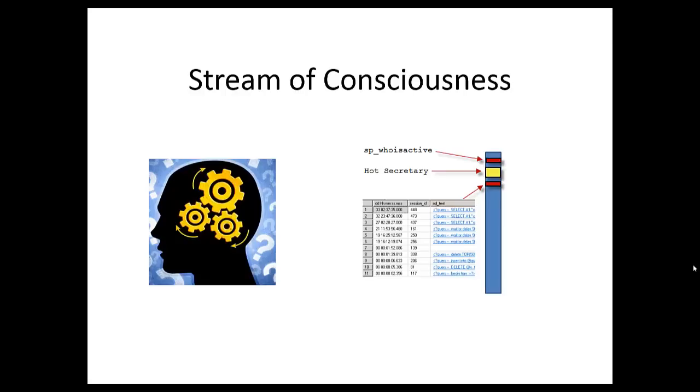So it's interesting to note that I was thinking of SP_who is active, hot secretary, and then back to SP_who is active. You notice there's no grouping there, right? There's no area down at the bottom or up at the top for SP_who is active and down at the bottom for hot secretary. It really is just like a stream of what's going on in a database right now.